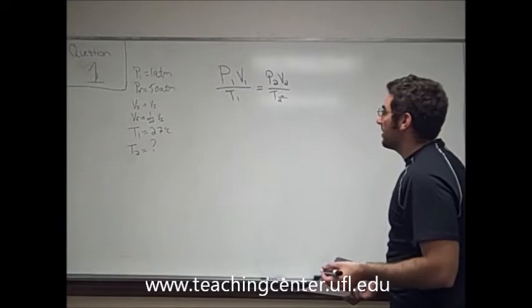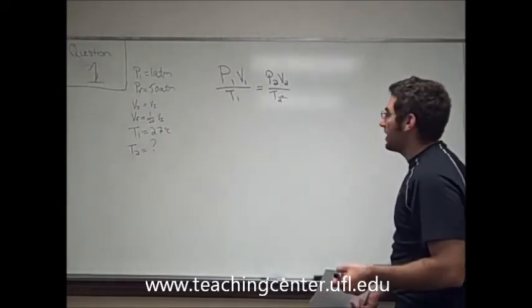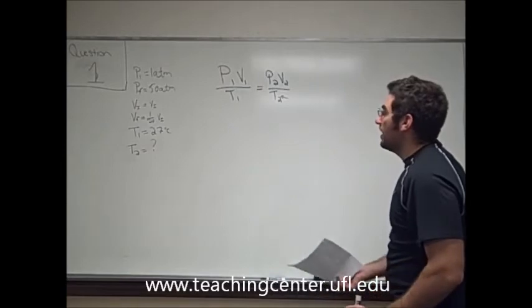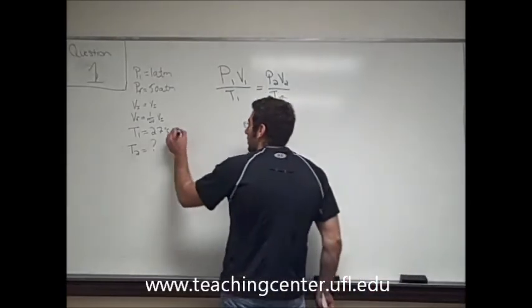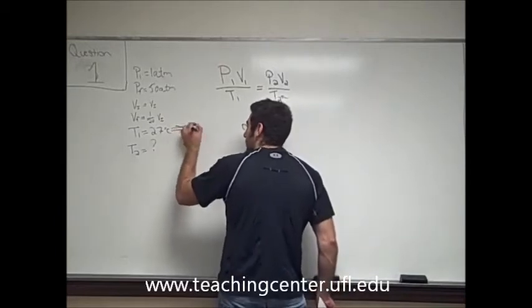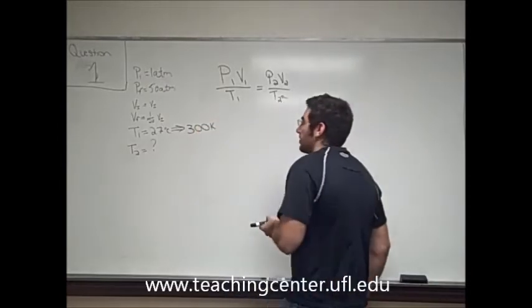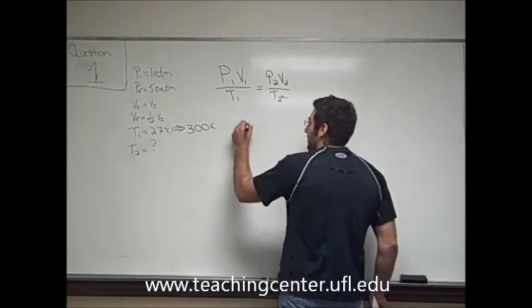So the biggest concern we have with this question is, maybe you might get a little confused because there's no actual number for the volume, but you have to convert 27 degrees Celsius into Kelvin. So remember, 27 plus 273 is going to give us 300 Kelvin. So let's go ahead and plug everything in.